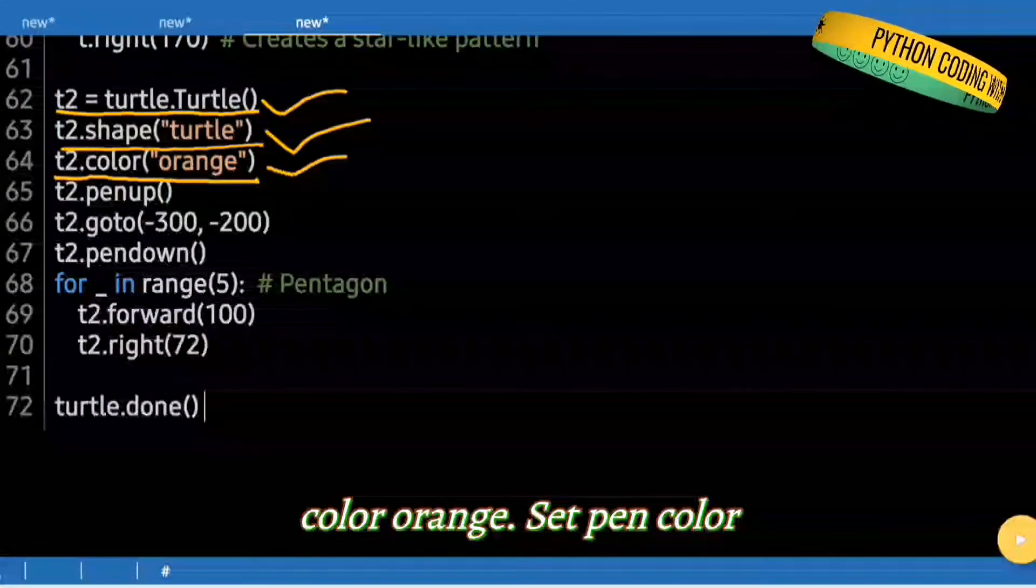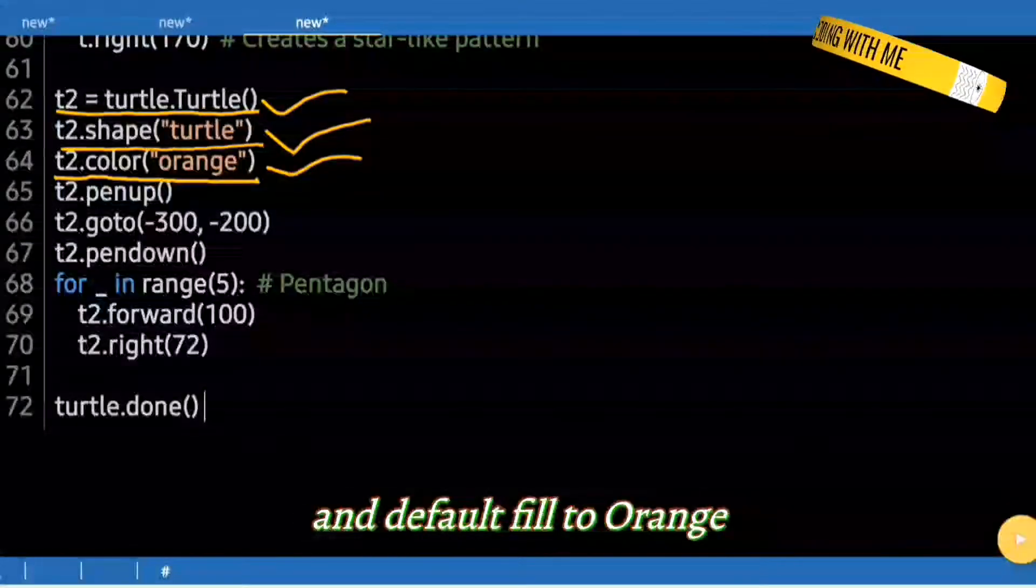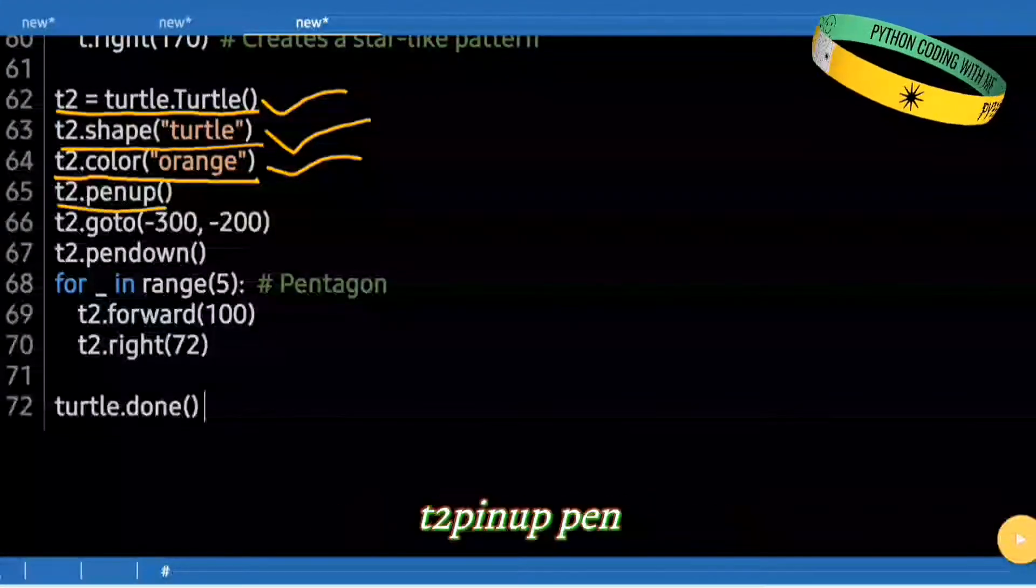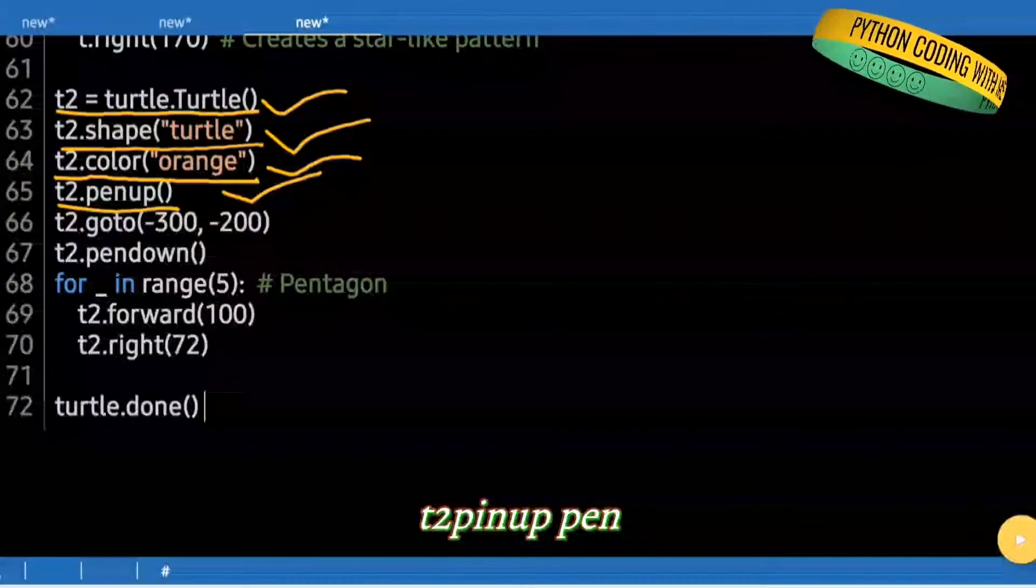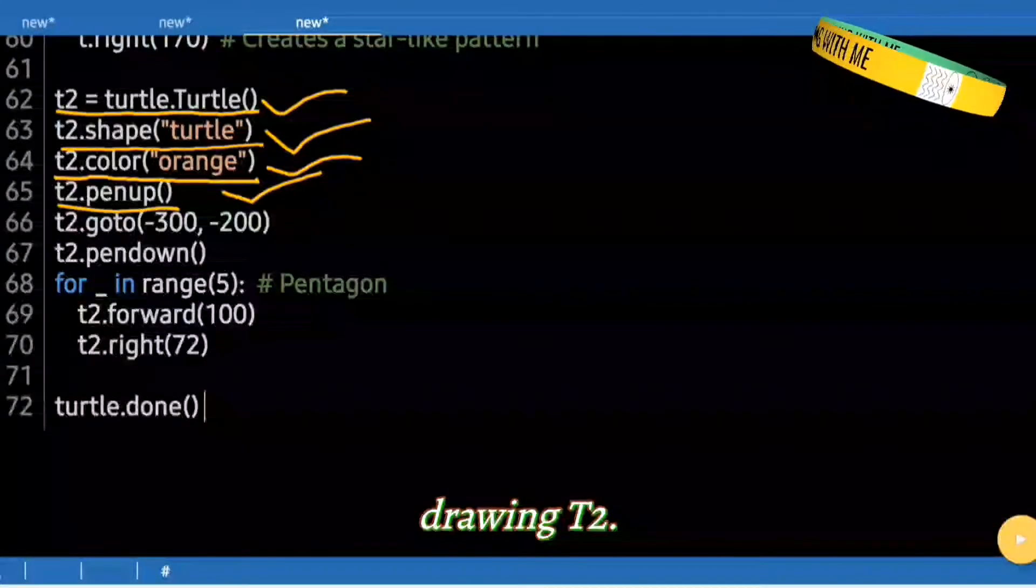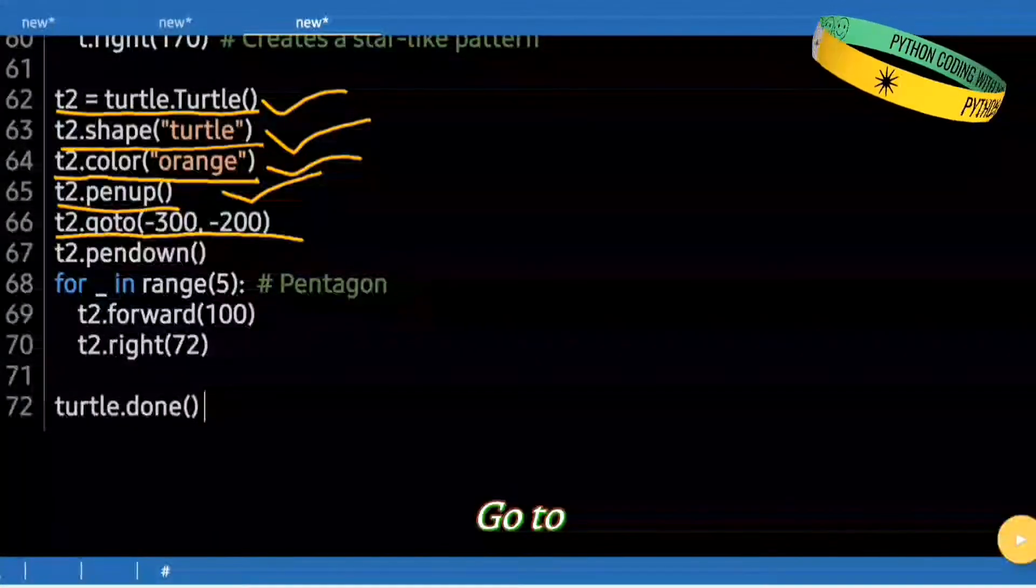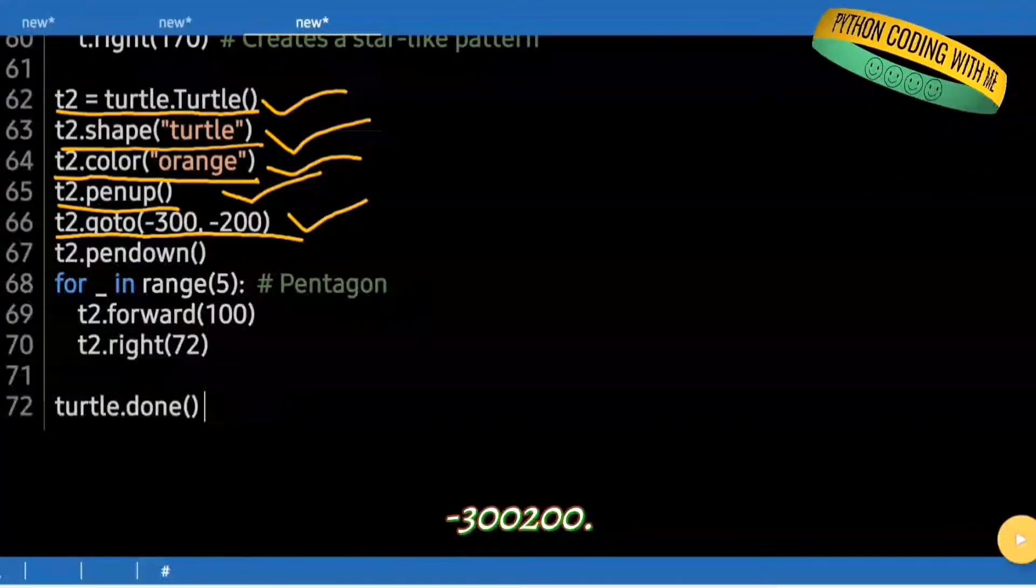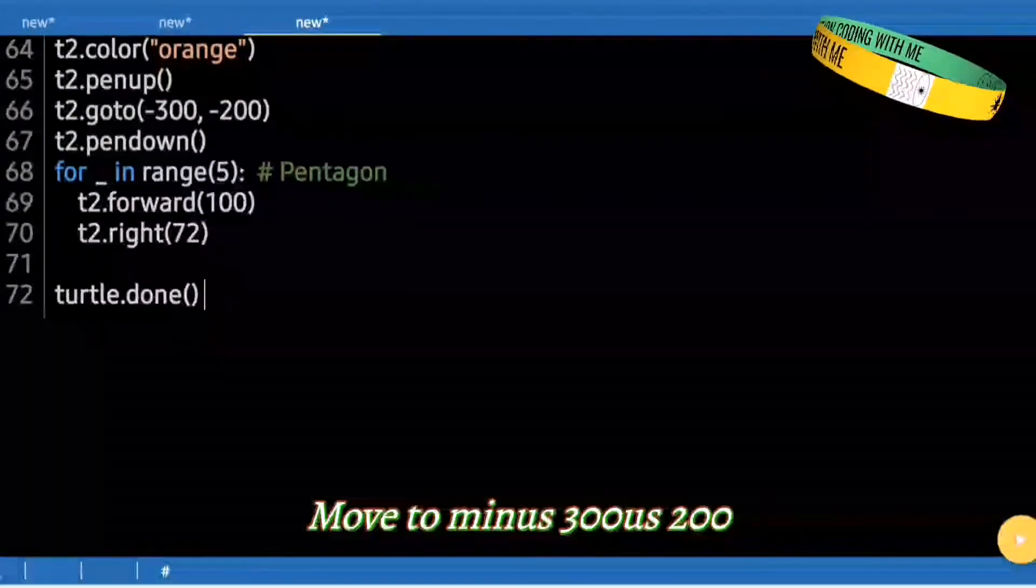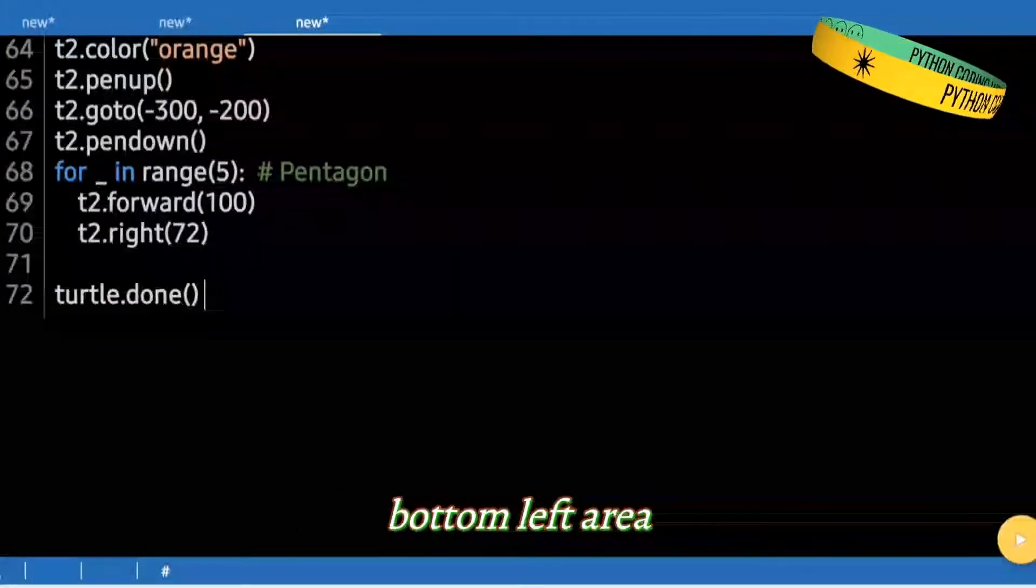t2.color("orange"). Set pen color and default fill to orange. t2.penup(). Move without drawing. t2.goto(-300, -200). Move to minus 300 minus 200. Bottom left area.